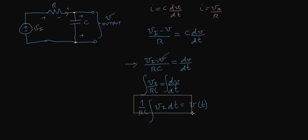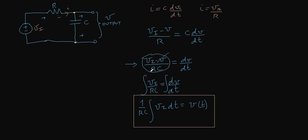This equation says the voltage V across the capacitor equals one over RC times the integral of the input voltage — this is an integrator. This is only valid if V is much less than VI. We can ensure this is true if RC is really large, because then the term V becomes really small and VI minus V approaches zero.